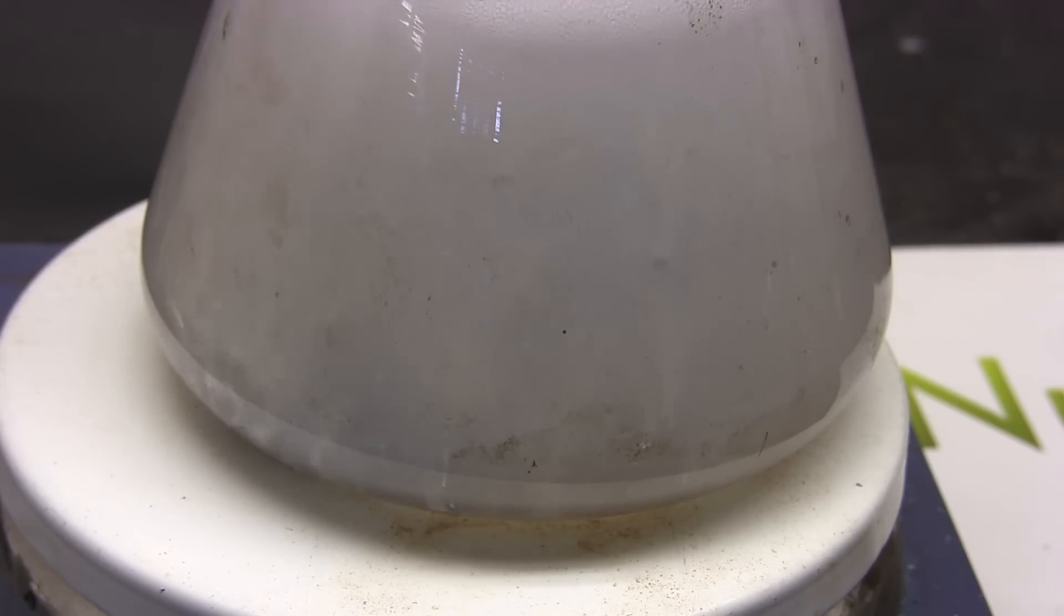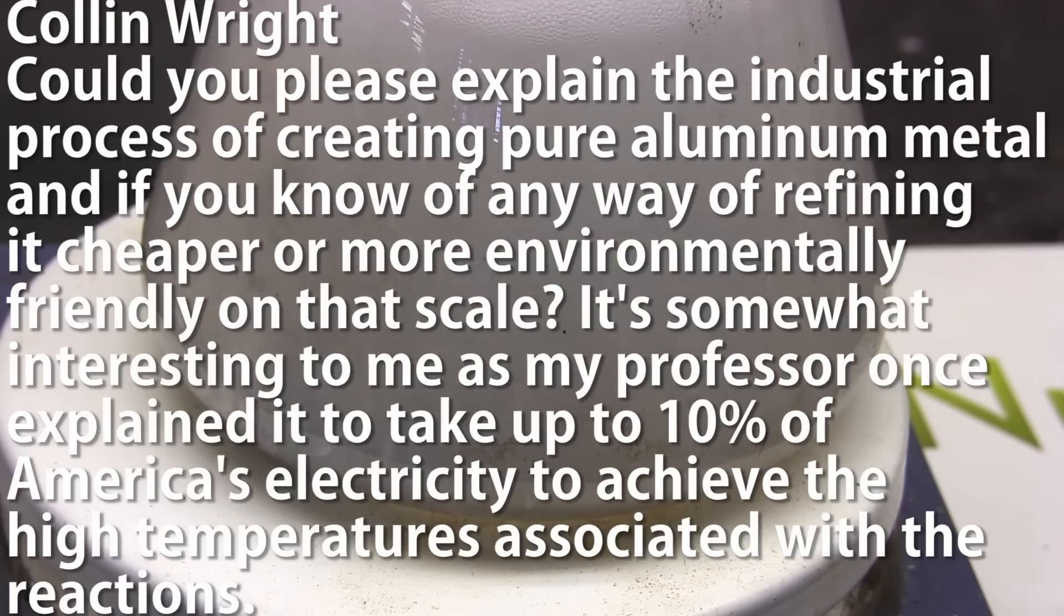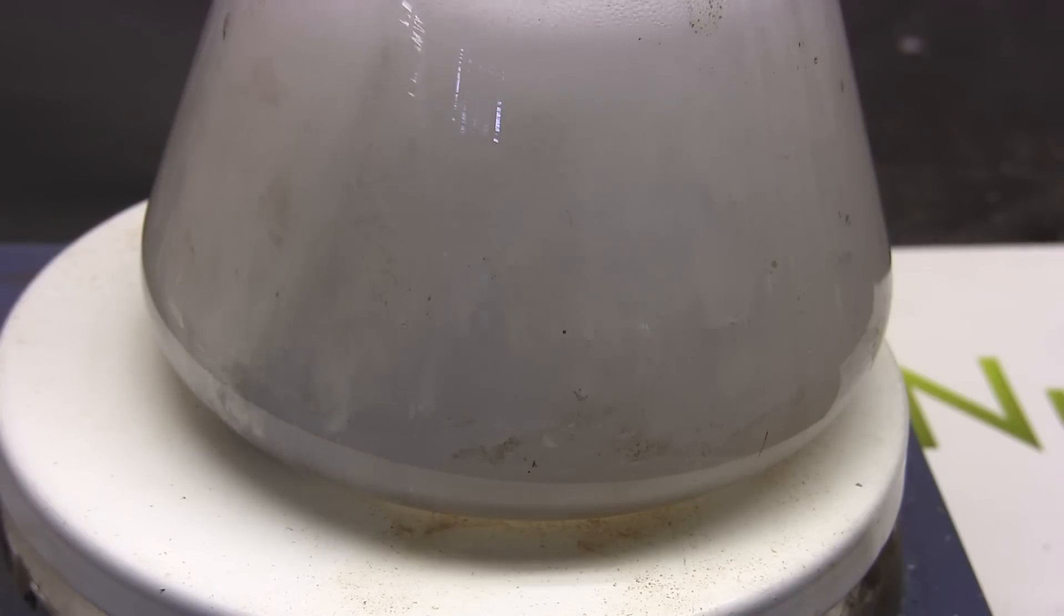Colin Wright asks, could you please explain the industrial process for creating pure aluminum metal, and if you know of any way of refining it cheaper or more environmentally friendly on that scale? It's somewhat interesting to me as my professor once explained it to take up 10% of America's electricity to achieve the high temperatures associated with the reactions. Okay, the process for making aluminum is pretty much textbook chemistry. The primary ore of aluminum is aluminum oxide. Now this melts at 2000 degrees Celsius and since lower temperature is cheaper and easier to work with, it's dissolved in sodium hexafluoroaluminate.